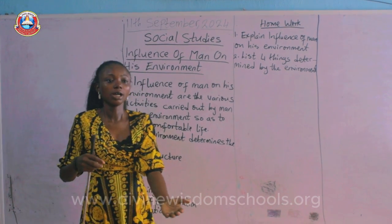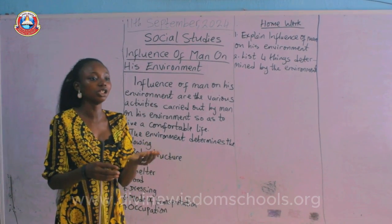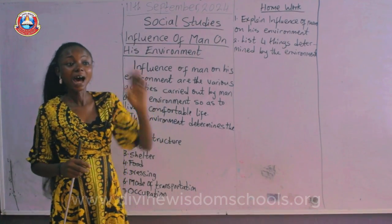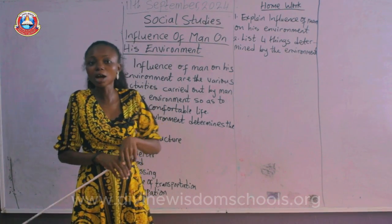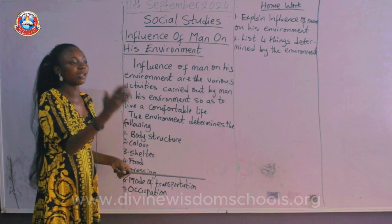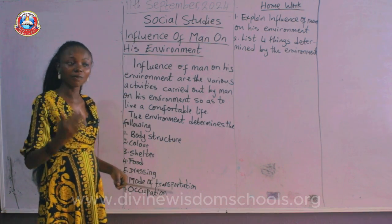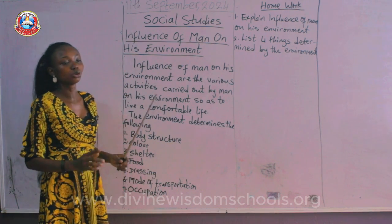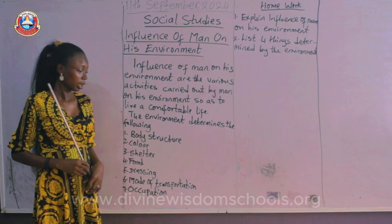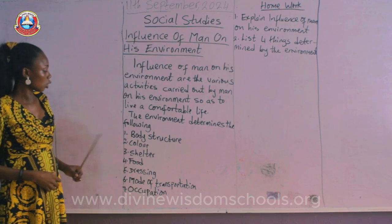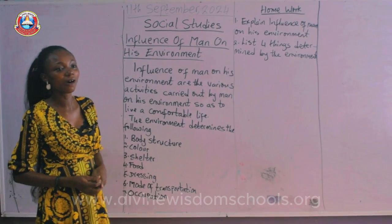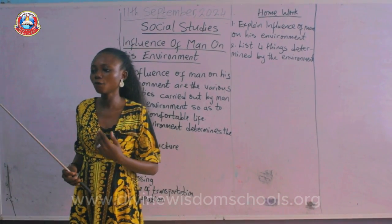They use wood to construct their houses at that elevated level above the water, and they are comfortable there. We cannot build that kind of shelter here because we do not have as much water around us. So the environment determines the type of shelter people live in.